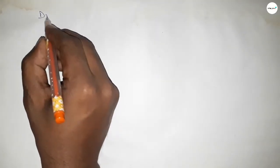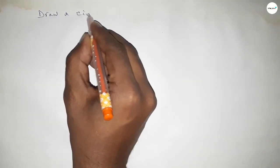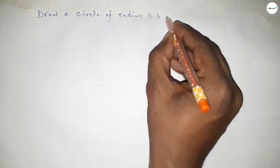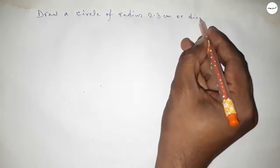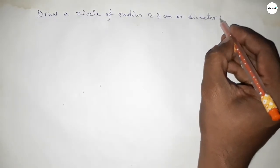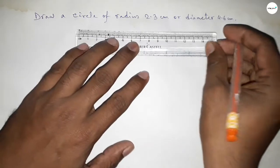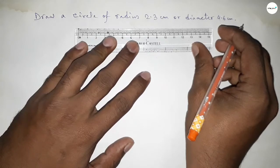Hi everyone, welcome to SSR Classes. Today in this video we have to draw a circle of radius 2.3 centimeter or diameter 4.6 centimeter. So let's start the video. First of all, we have to draw here the length 2.3 centimeter.